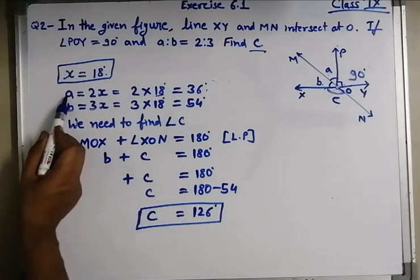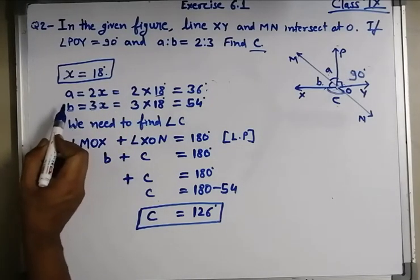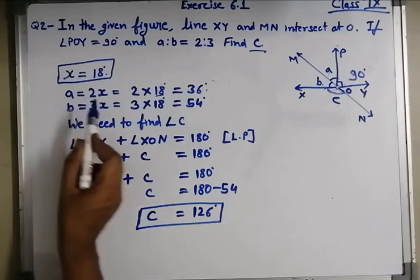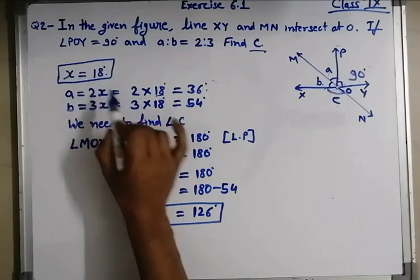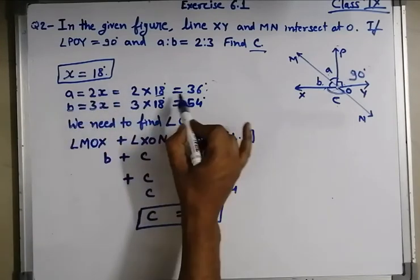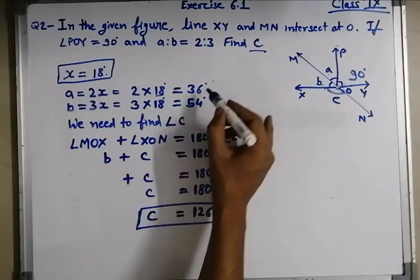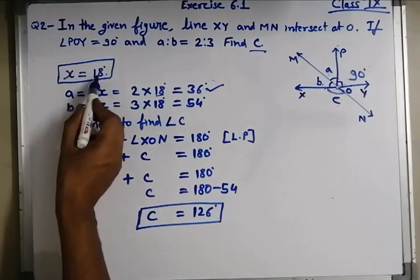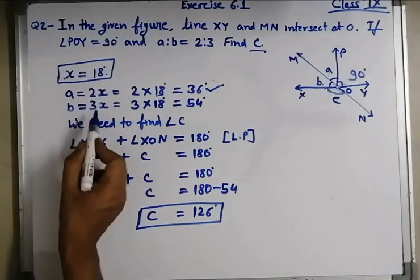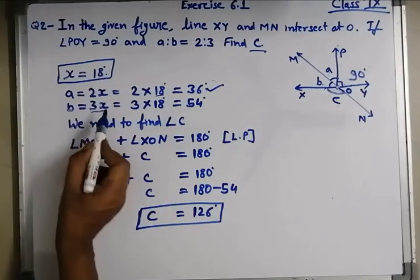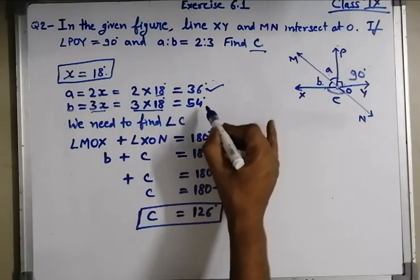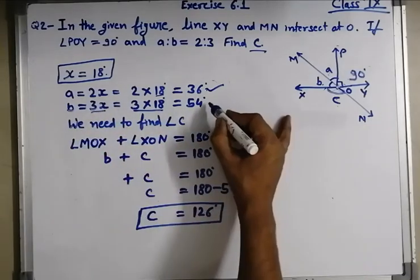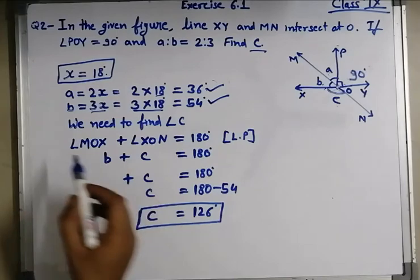Now we have to find the value of A and C. A is equal to 2x — put the value of x as 18 degrees — so angle A is 36 degrees. Similarly, putting the value of x in 3x: 3 into 18, so the value of B is 54 degrees.